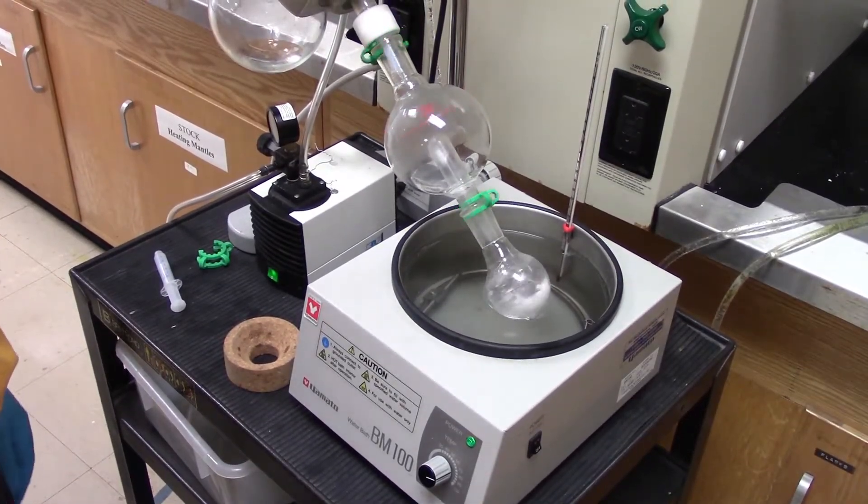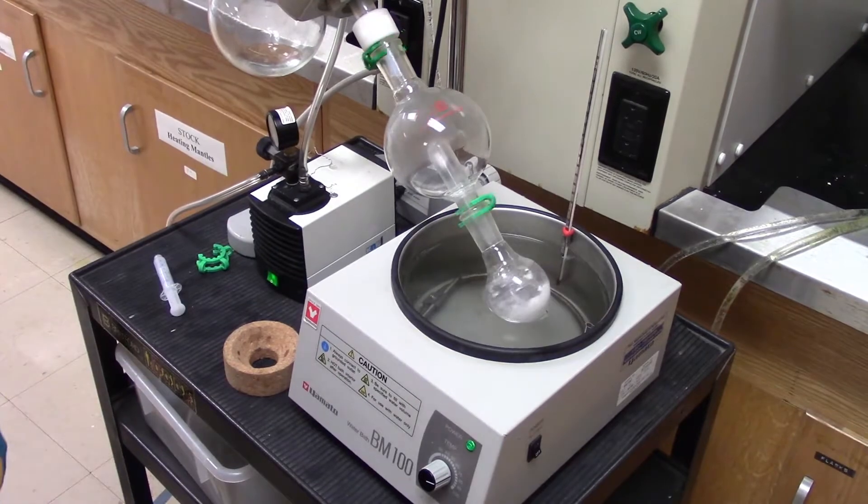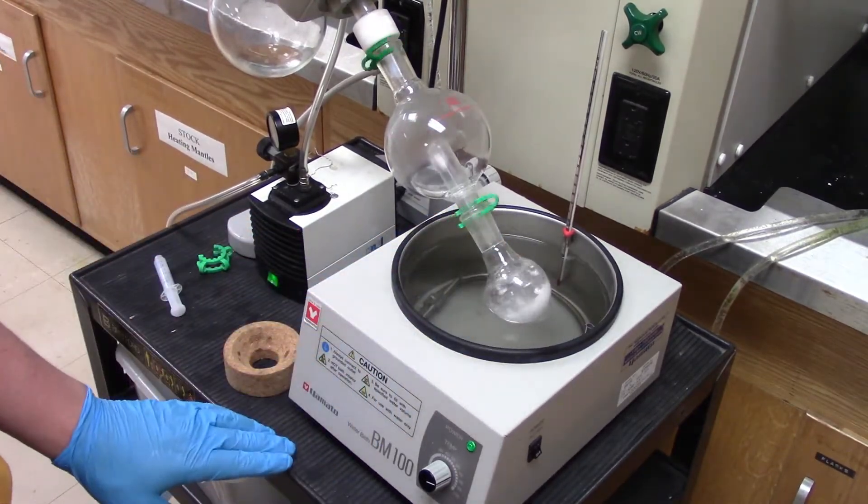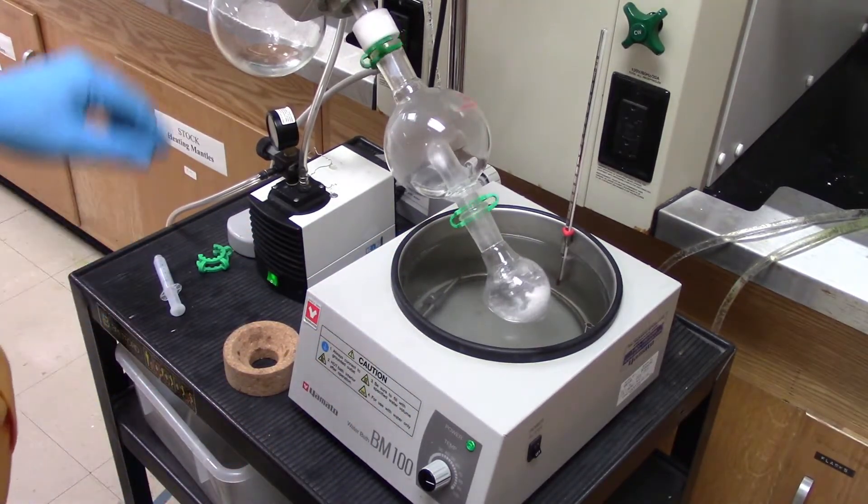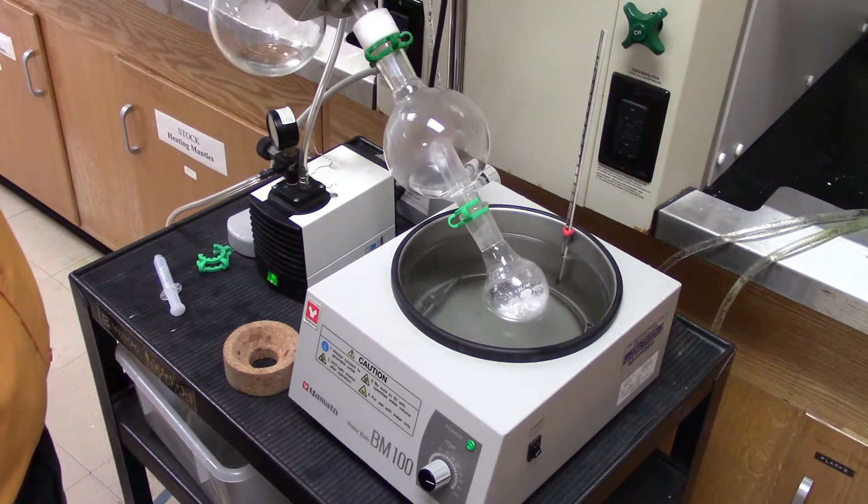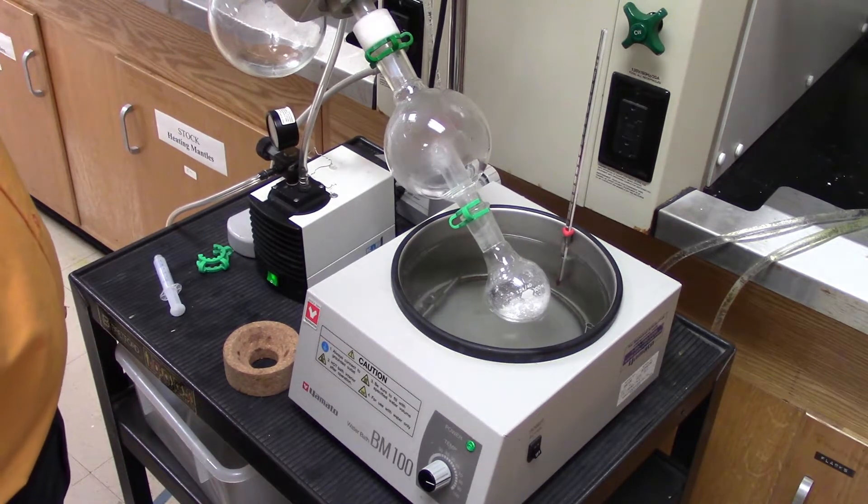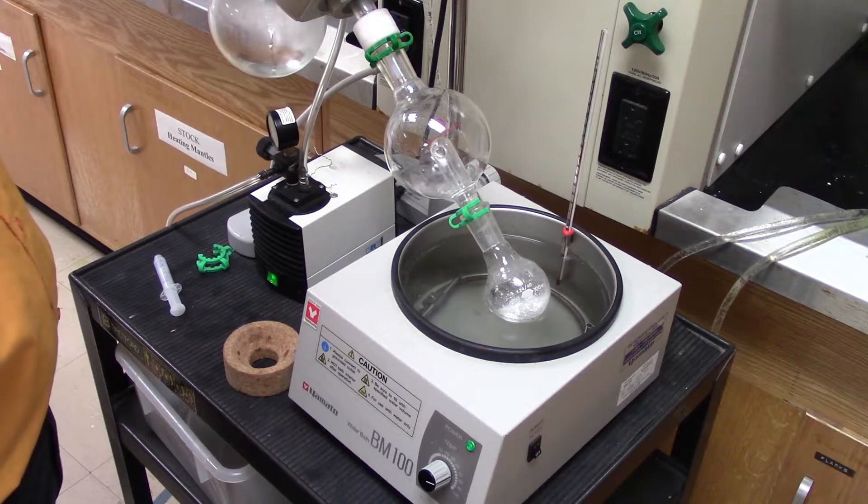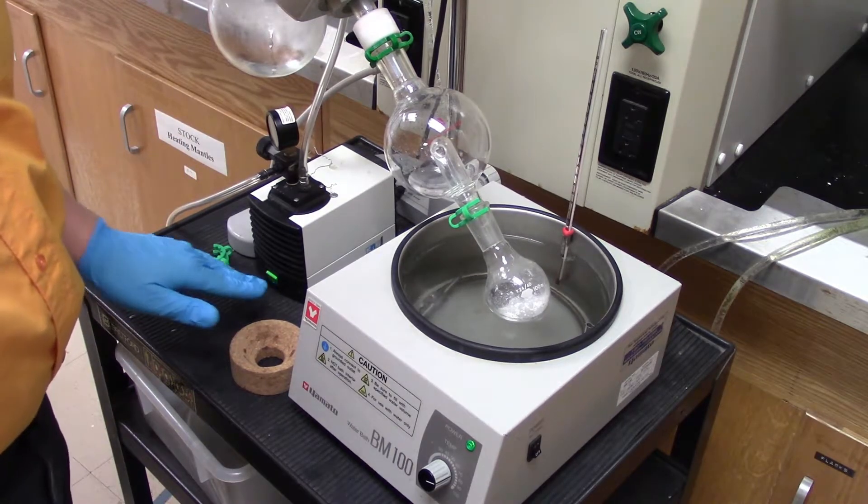Alright, so I let my rotovap run to completion here. And what you can see sliding along is the pure white acid aniline with a little bit of aniline impurity. So what I'm going to do is I'm going to stop the rotation, open up the pump, open up the valve, turn off the pump.